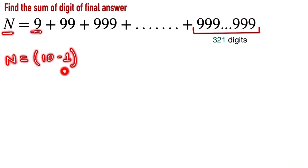So here, 9 can be written as 10 minus 1, and 99 can be written as 100 minus 1, and 999 can be written as 1000 minus 1. And the last digit can be written as... here is the 321 digit, so now we power on the...